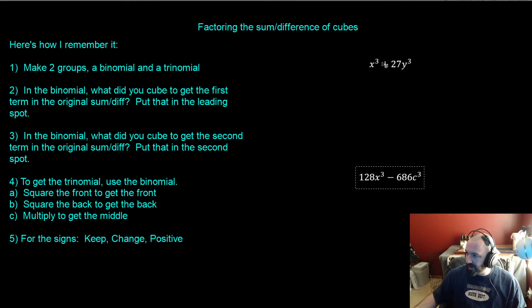Make two groups. So in this first one, I've just nailed it down to a sum of cubes. It's nothing more than that. So I'm going to make two groups, a binomial and a trinomial. I'll make a small one and a big one. In the binomial, what did you cube to get the front or that leading term? Well, I cubed X. Put that there. What did I cube to get the back? Well, I have two things going on, so my 27 comes in as a cube, is 3 cubed. And then my Y I cubed to get Y cubed, so that's how that works. Don't worry about the signs yet. I take care of those at the end because it's easier for me to keep track of them.